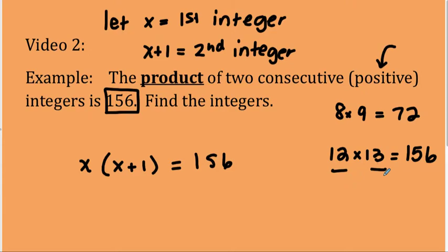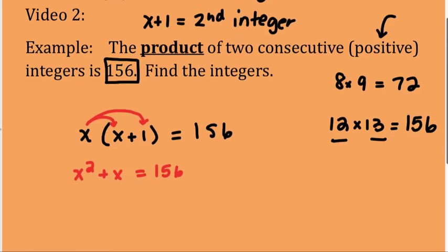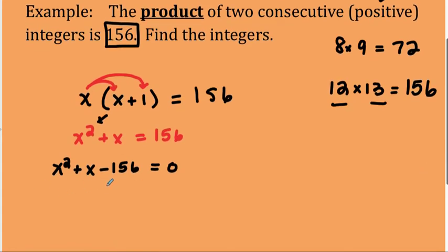So I know that my numbers are 12 and 13. Well, let's check it with this algebraic equation we just got. Okay, so I have to distribute my x. So I get x squared plus x equals 156. I see that it's a quadratic equation because the highest exponent is 2, which means I have to get it in standard form set equal to 0. So I'm going to subtract 156 from both sides. So now it's a trinomial or a quadratic set equal to 0. I have to solve by factoring.